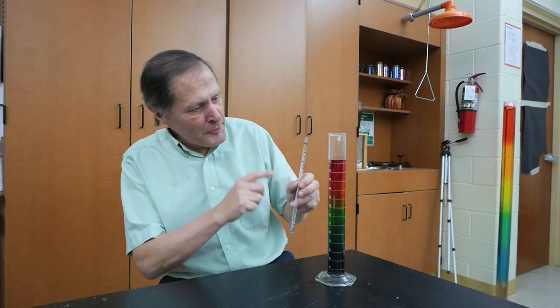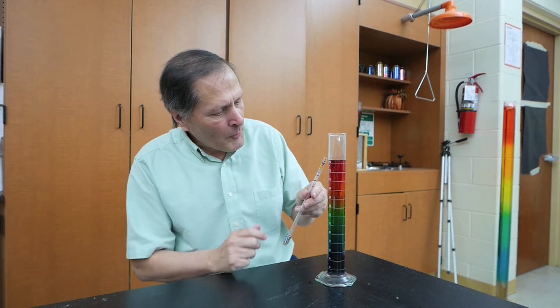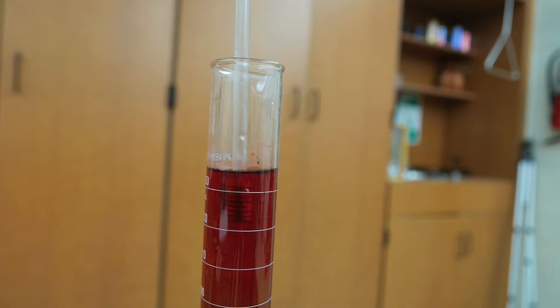Now what would happen if I added my hydrometer to one of the density columns? I think it would fall somewhere in between, but let's try it. Now this would vary greatly depending on which column we put it in, but as you can see it does fall somewhere in between.